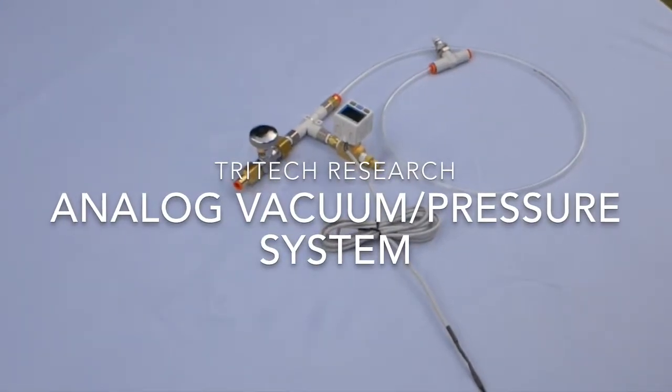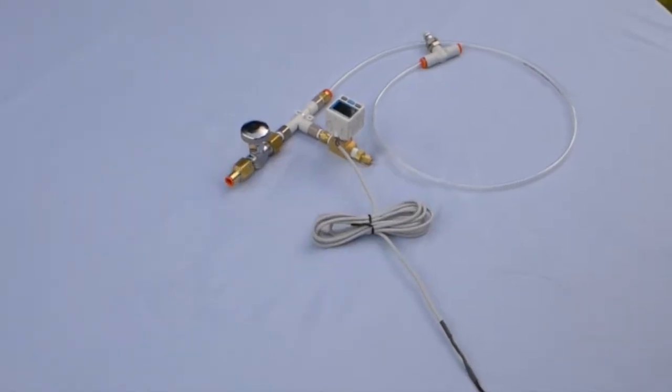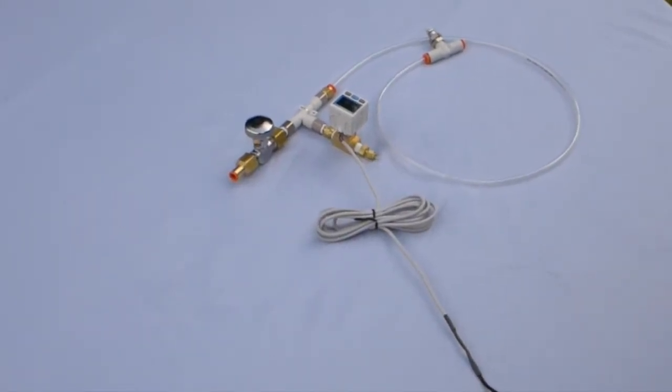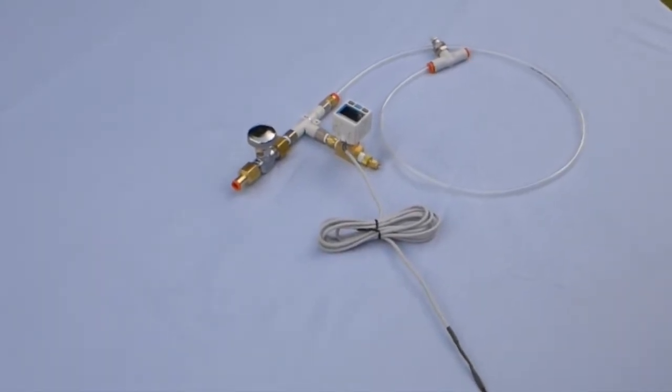Hi, this is the Tritec analog multi-pressure system and it can be used to create a positive or negative pressure starting with a positive pressure source.